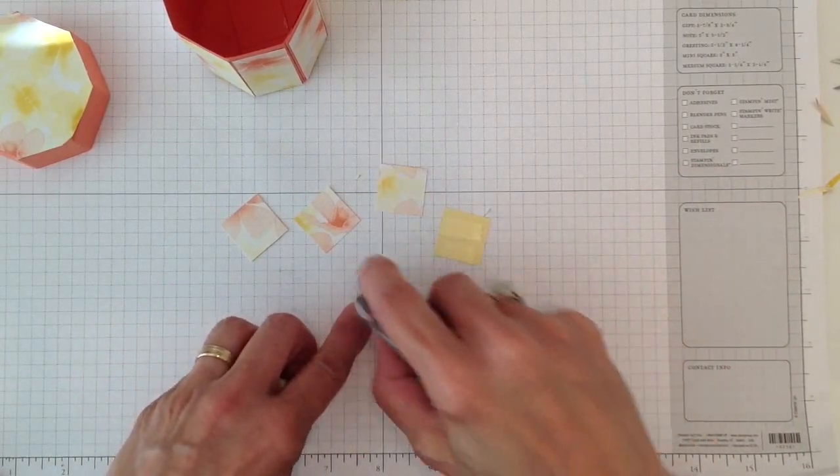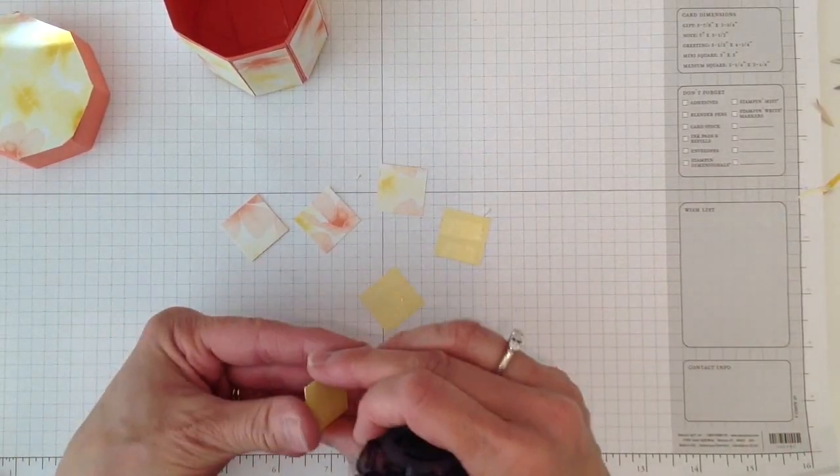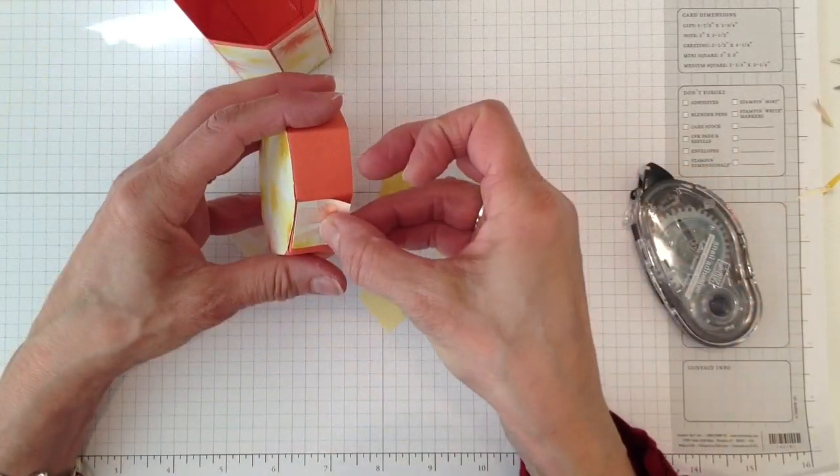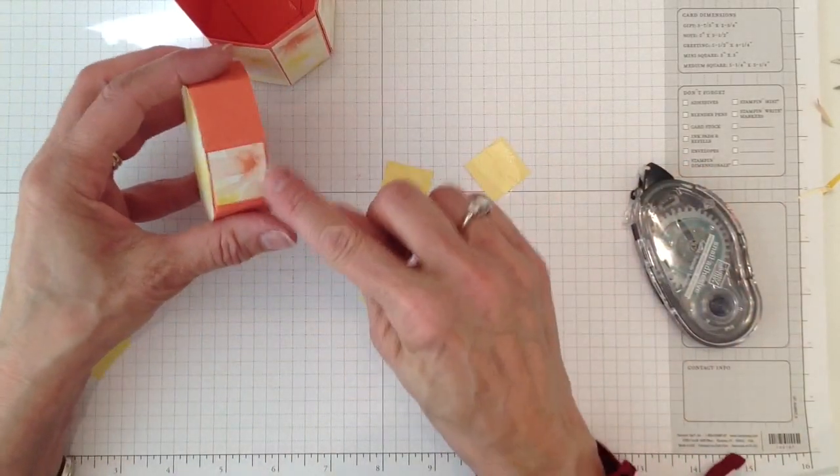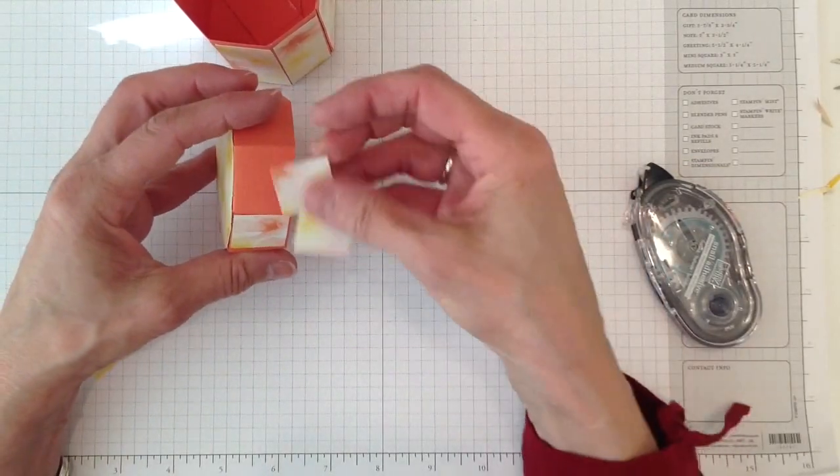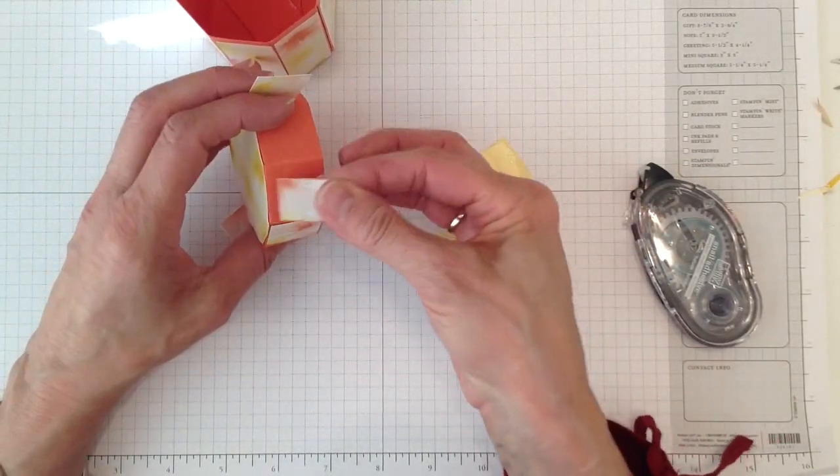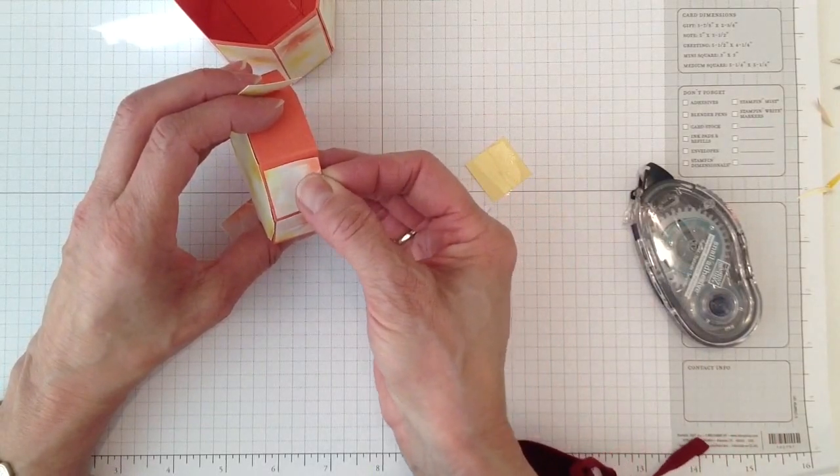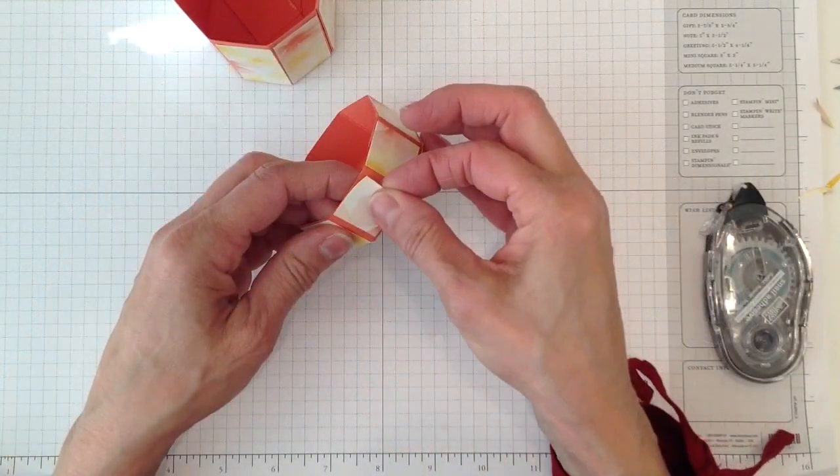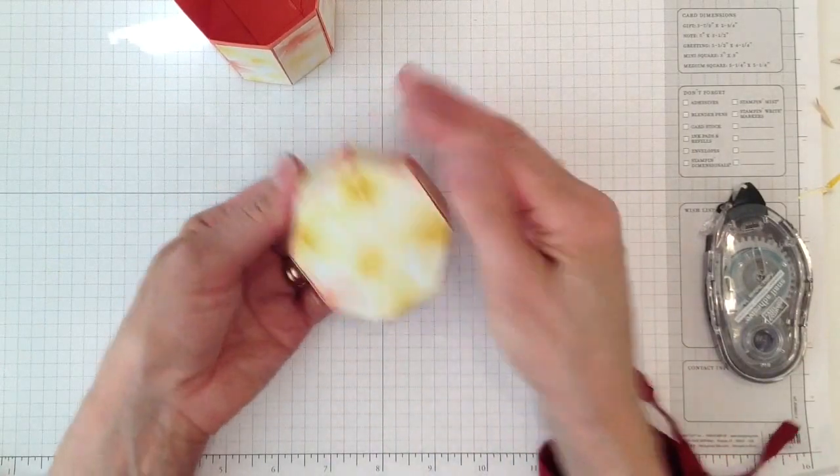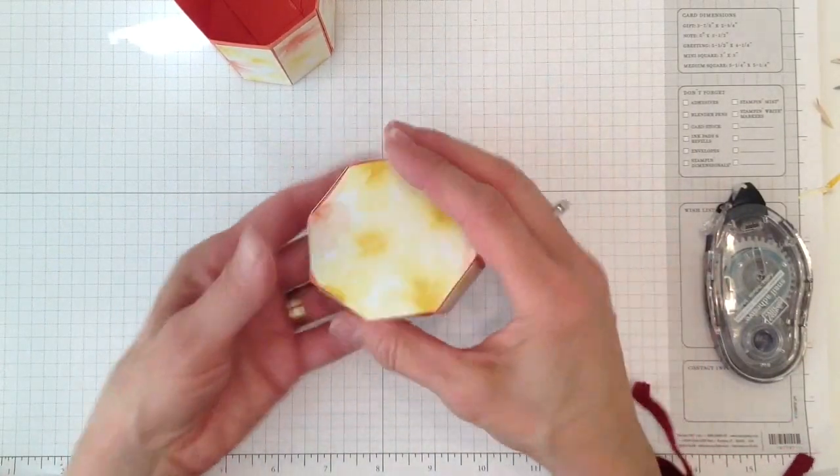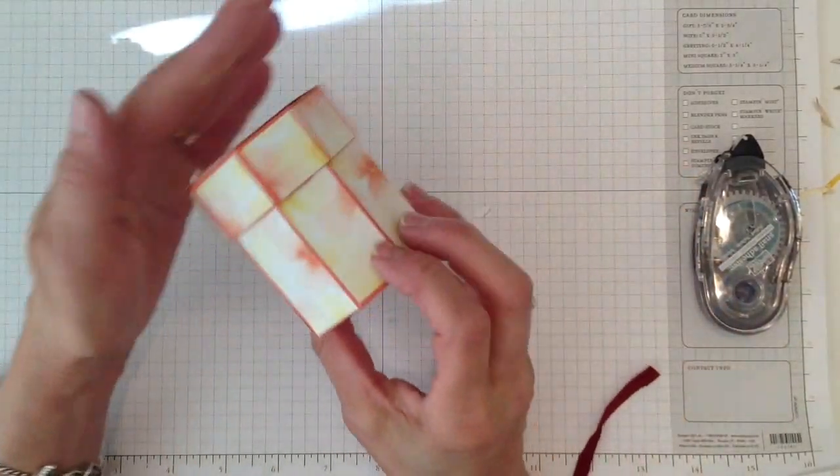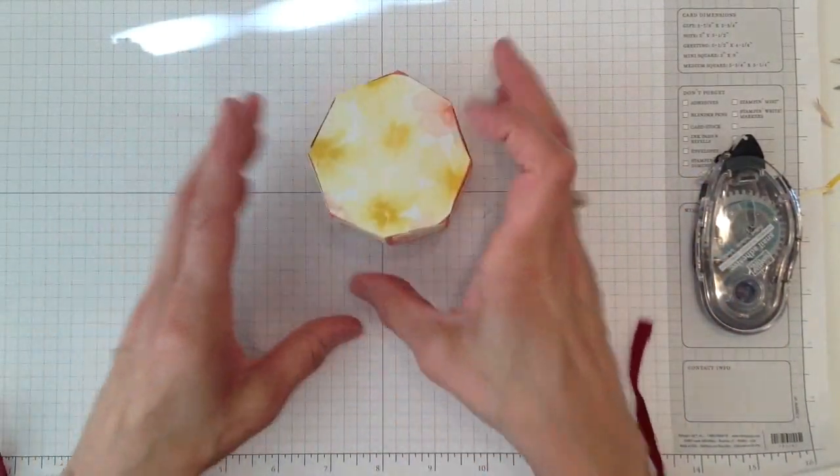And I'm just going to go ahead and stick a little snail on each one of these. Put them around the edge here. And I try to line this bottom part up as best as I can. So there you have it. And it fits just like that. Isn't it adorable? I just love this octagon box.